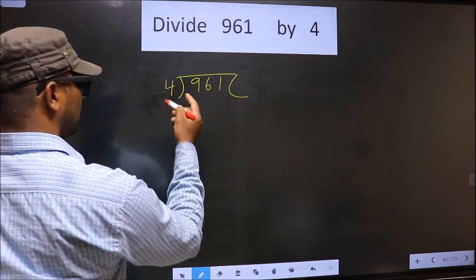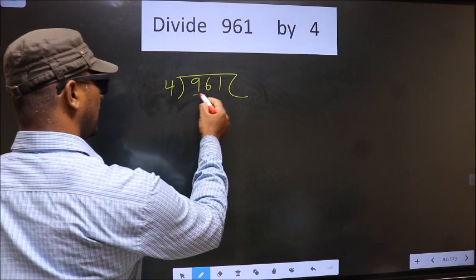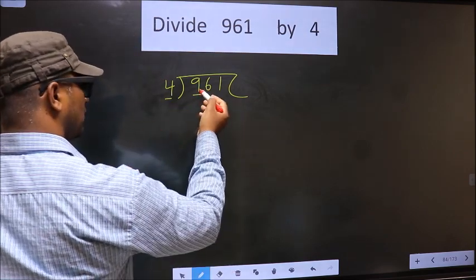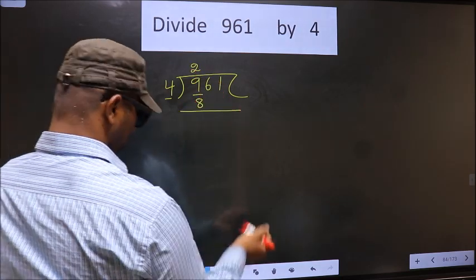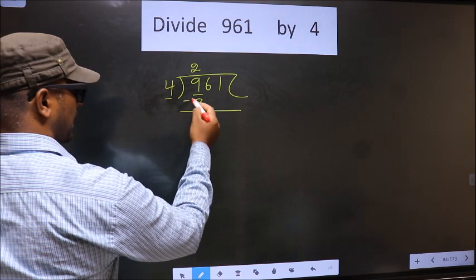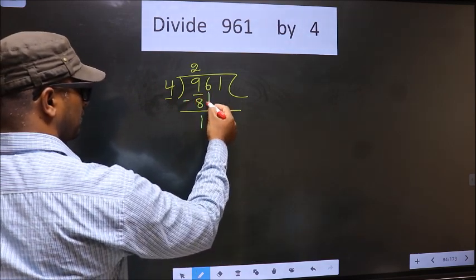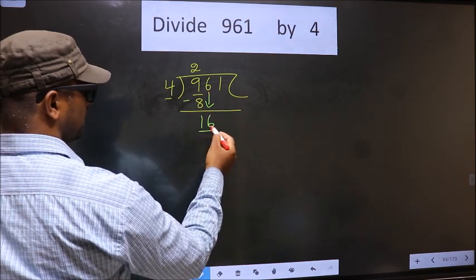Now here we have 9. A number close to 9 in the 4 table is 4×2=8. Now you subtract 9 minus 8 equals 1.